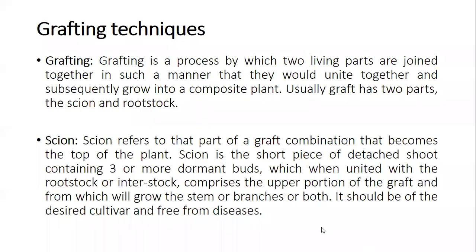Today's topic is grafting techniques. Grafting is a process by which two living parts are joined together in such a manner that they unite and subsequently grow into a composite plant. Usually a graft has two parts: rootstock and scion. Two different varieties can be united with each other to produce a new plant. In grafting, there are two main components responsible for success: the scion and the rootstock.